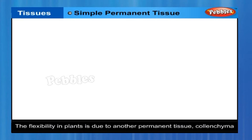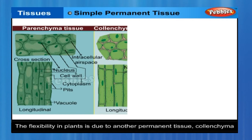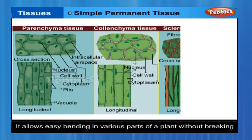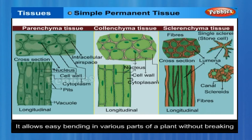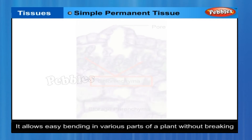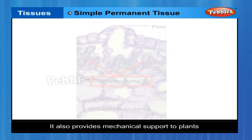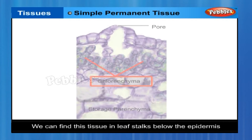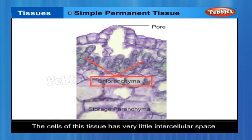Such a parenchyma type is called aerenchyma. The flexibility in plants is due to another permanent tissue, collenchyma. It allows easy bending in various parts of a plant without breaking, and also provides mechanical support to plants. We can find this tissue in leafy stalks below the epidermis. The cells of this tissue have very little intercellular space.